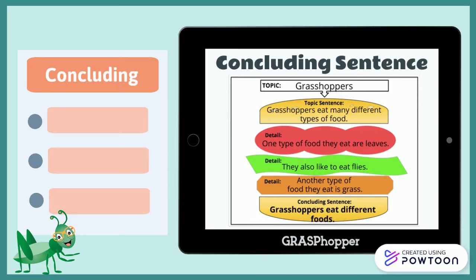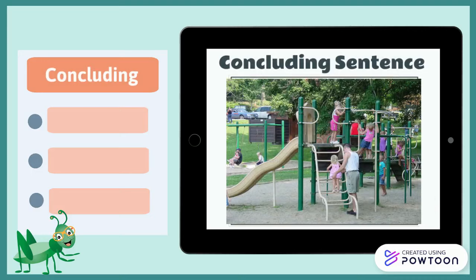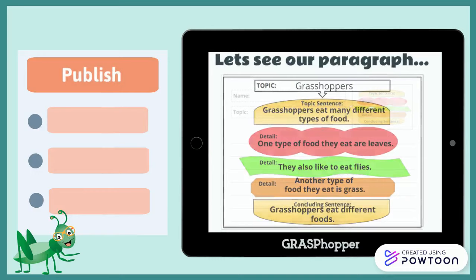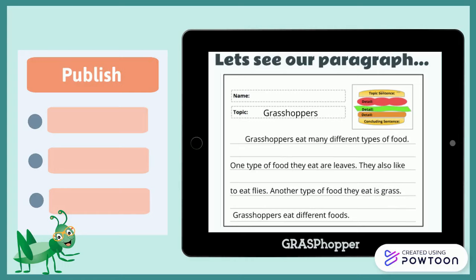Now you give it a try. On your organizer, write a concluding sentence about playgrounds. The organizer is finished. Let's use it to write a complete paragraph on our writing paper. Now you give it a try — don't forget your organizer.